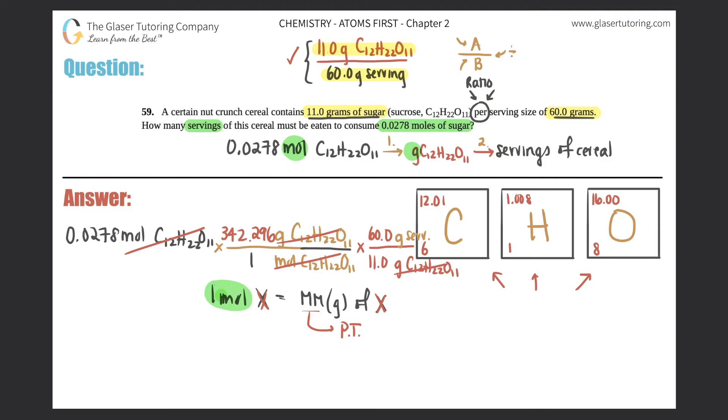Grams of sugar cancel out with grams of sugar, and now you're left with grams of the serving size. Let's just do this math quick. If we multiply the numerators, 0.0278 times 342.296, you get 9.51583 divided by the 11.